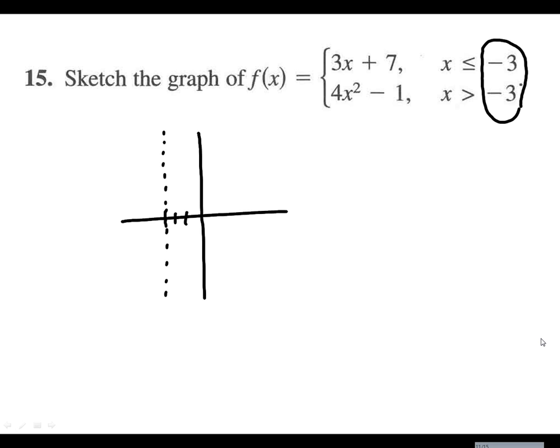So our top equation is 3x plus 7. I'm going to go up 7. 5, 6, 7, make a dot. Now normally, I would go up 1 over 3, but I want to come back to our line here. So I think what I'm going to do is just plug in our important value of 3x plus 7. Go ahead and plug in negative 3. 3 times negative 3 is negative 9 plus 7. That's going to be negative 2. So what I've got here is a x value of negative 3, y value of negative 2.